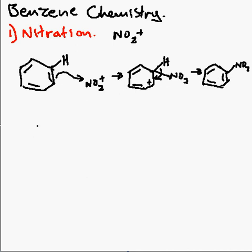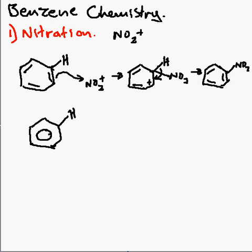The other way to look at this is the Wheland intermediate, which is quite popular with A-level teaching, as it looks a little easier to understand, but there still has to be a bit of care in this intermediate step, as it's actually quite complicated. So we'll start off again with the hydrogen there, but this time we take an arrow from the circle, like so, which attacks the NO₂⁺.